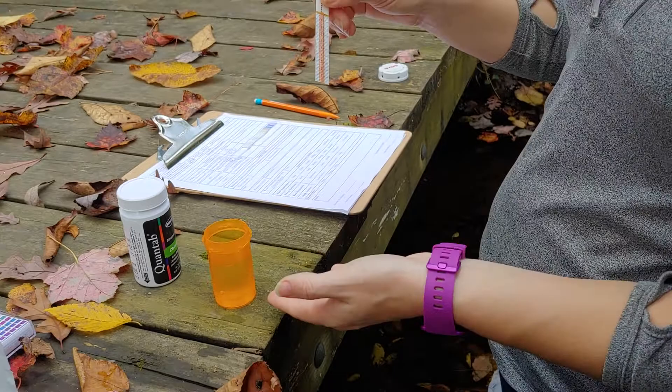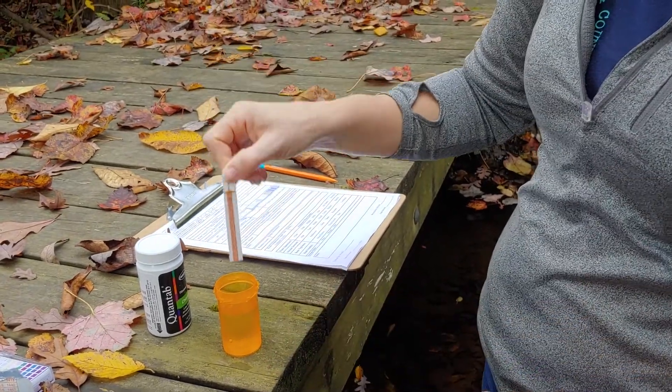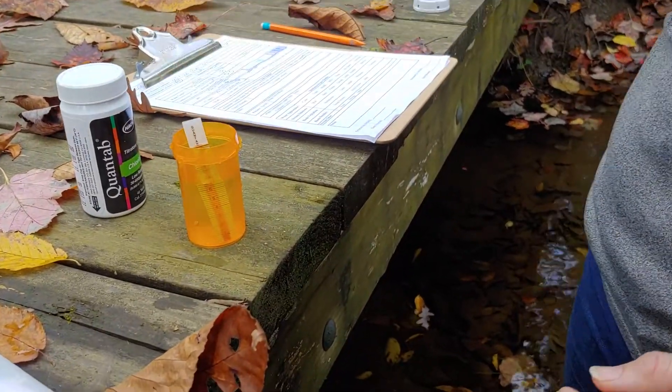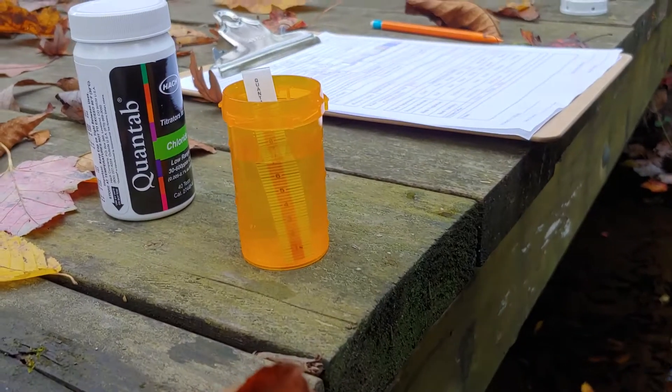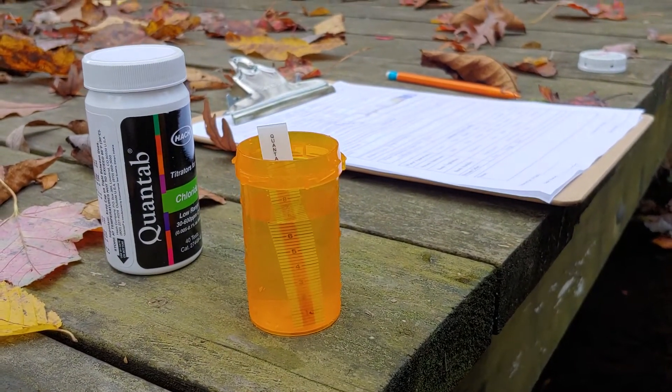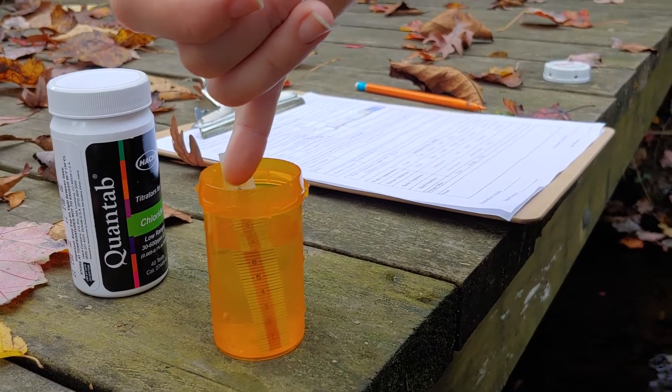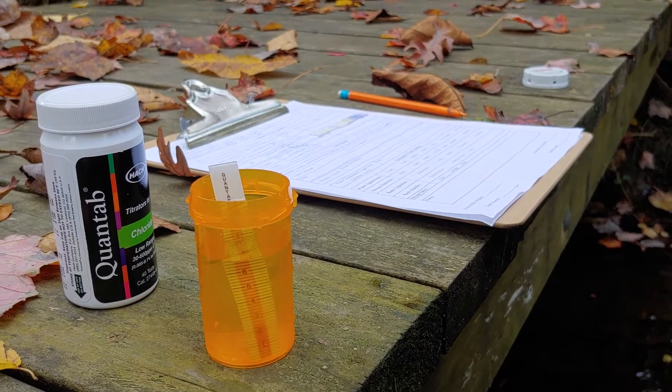So we've collected another sample of water and we're going to submerge our chloride strip for about 45 seconds to a minute until we see a change in color on our top indicator line.